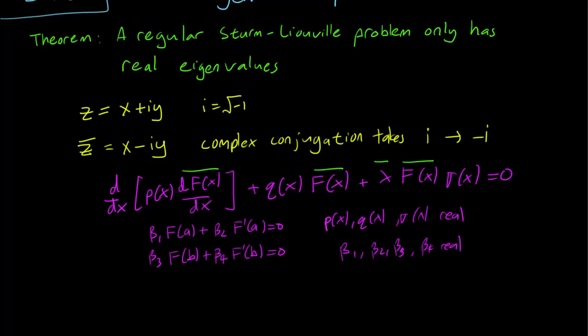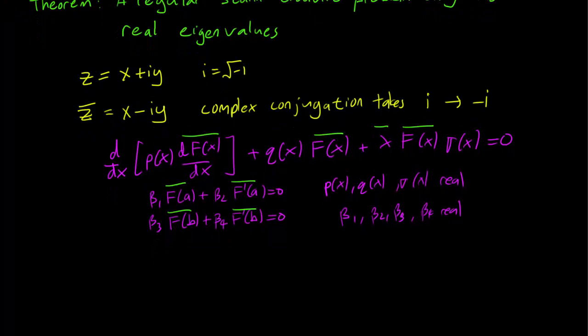It turns out, and don't forget the boundary conditions as well. If we conjugate both sides of the boundary conditions, replace all the i's with minus i. What we get here is that if lambda and f are an eigenvalue and eigenfunction of a Sturm-Liouville problem, then conjugate of lambda and conjugate of f must also be an eigenvalue and eigenfunction of the Sturm-Liouville problem.